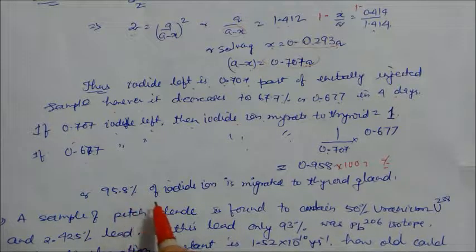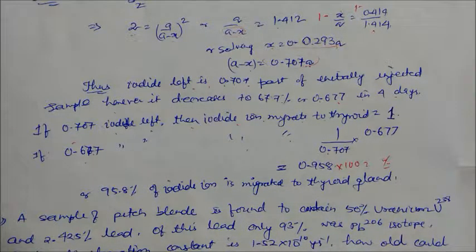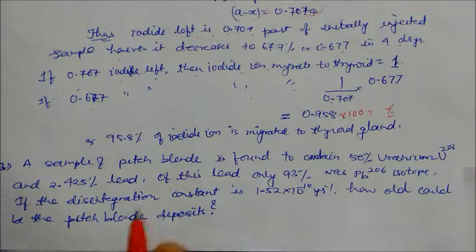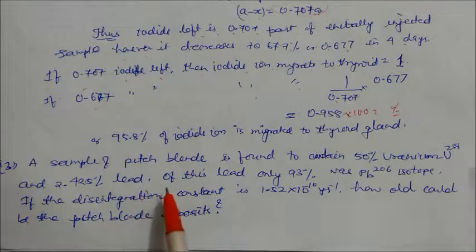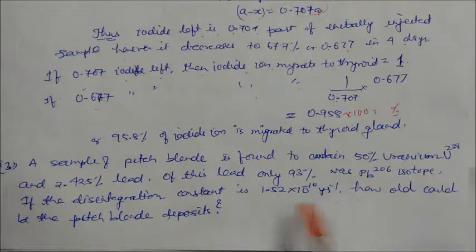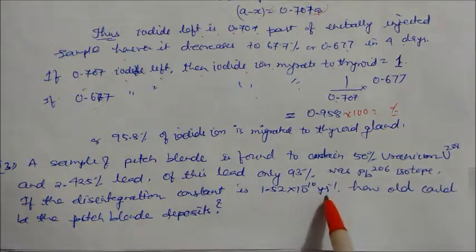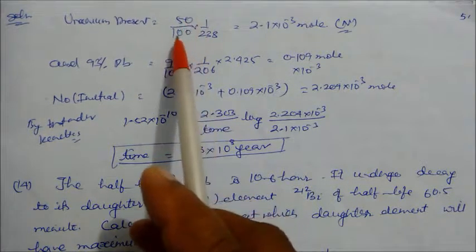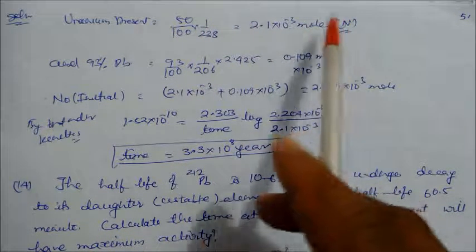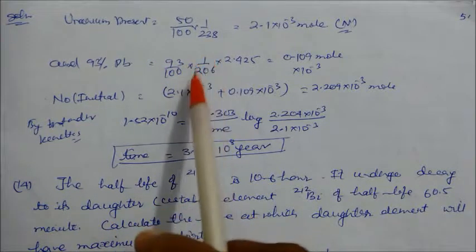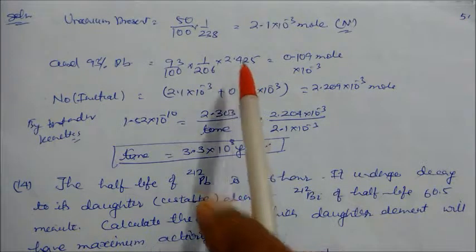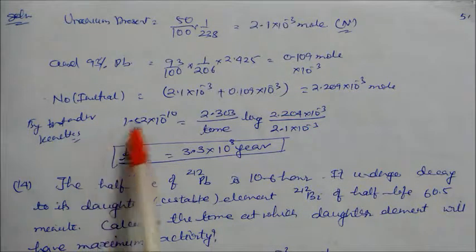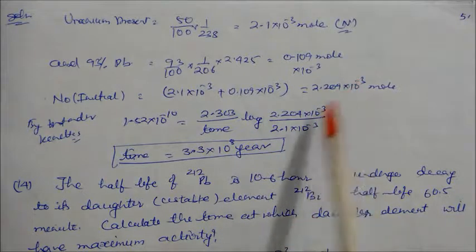Problem 13: A sample of pitchblende contains 50% uranium U-238 and 2.425% lead. Of this lead, only 93% is the relevant isotope. Disintegration constant is given. How old is the pitchblende? Uranium moles = 50%/238. Lead moles = 93% × 2.425/206. Total initial uranium = uranium left + uranium decayed. Using first order kinetics, the age of the ore comes out to 3.3×10⁸ years.